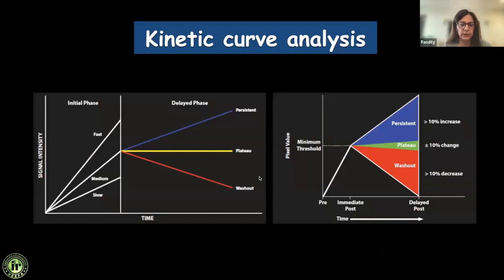Then we have kinetic curves. After acquiring dynamic contrast images, we divide contrast enhancement into two phases: the initial phase, which is the first two minutes, and the delayed phase, from two to six minutes. In the initial phase, enhancement can be slow (less than 50% increase), medium (50–100%), or fast (more than 100%). Fast enhancement is associated with malignancies; medium and slow are normally seen in benign conditions, though some malignancies can show slower enhancement.